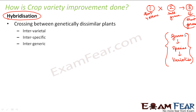Let us take the example of mango. When you go to buy mango, you would have seen many varieties available in the market — for example, Alphonso, Himsagar, Dasheri, Bombay Green, Langra. There are so many different varieties, but all of them are mangoes. They all belong to the same genus. The scientific name of mango — the genus — is Mangifera. So all the mango varieties you see in the market belong to the same genus Mangifera, but they are different varieties.